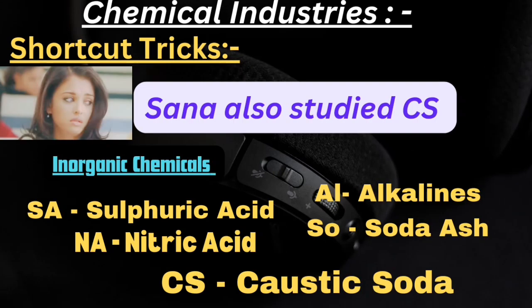The next shortcut is: 'Sana also studied CS.' These represent the inorganic chemicals. SA stands for sulfuric acid, NA stands for nitric acid, 'also' - AL stands for alkalines, SO stands for soda ash, and CS represents caustic soda. These are the inorganic chemicals.